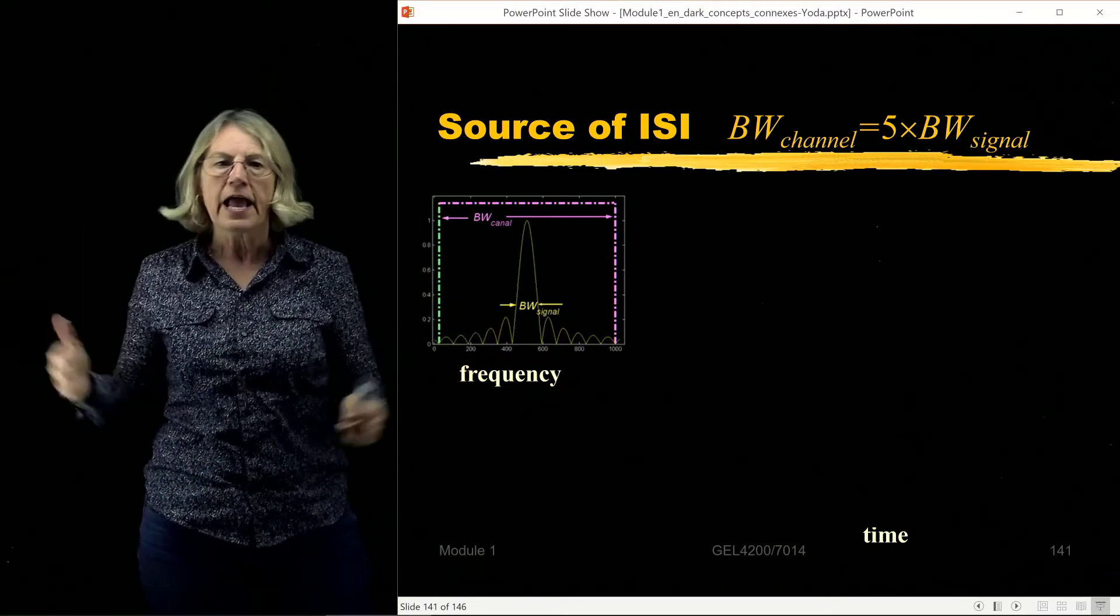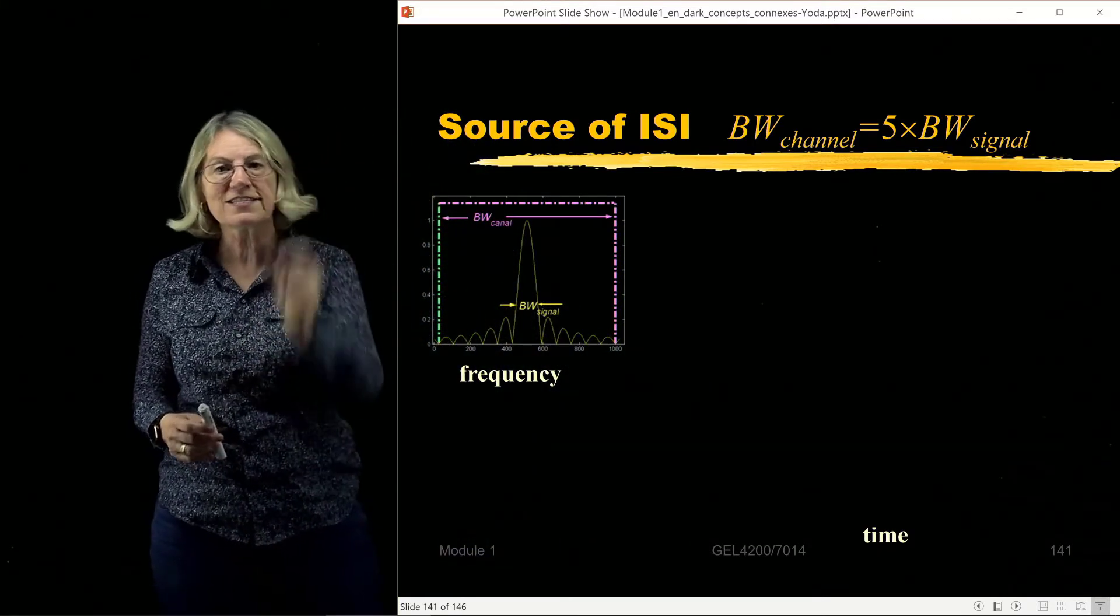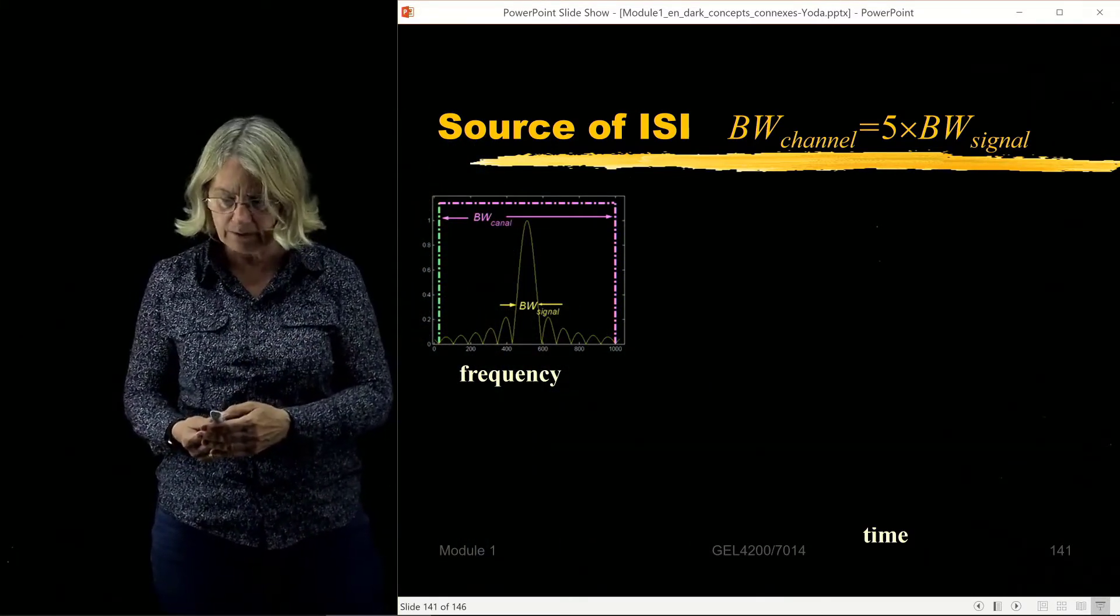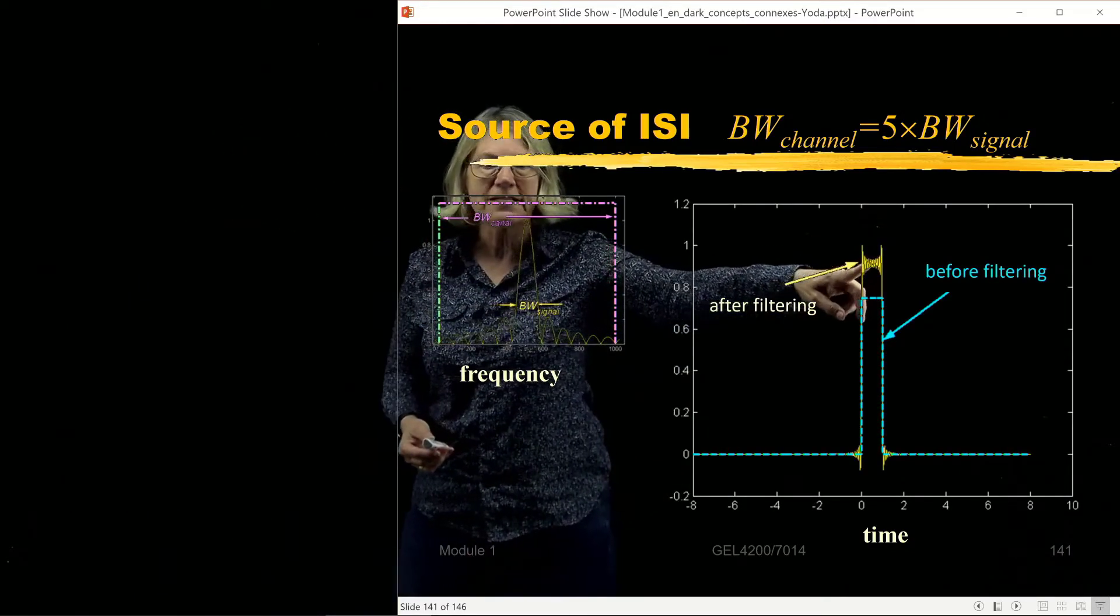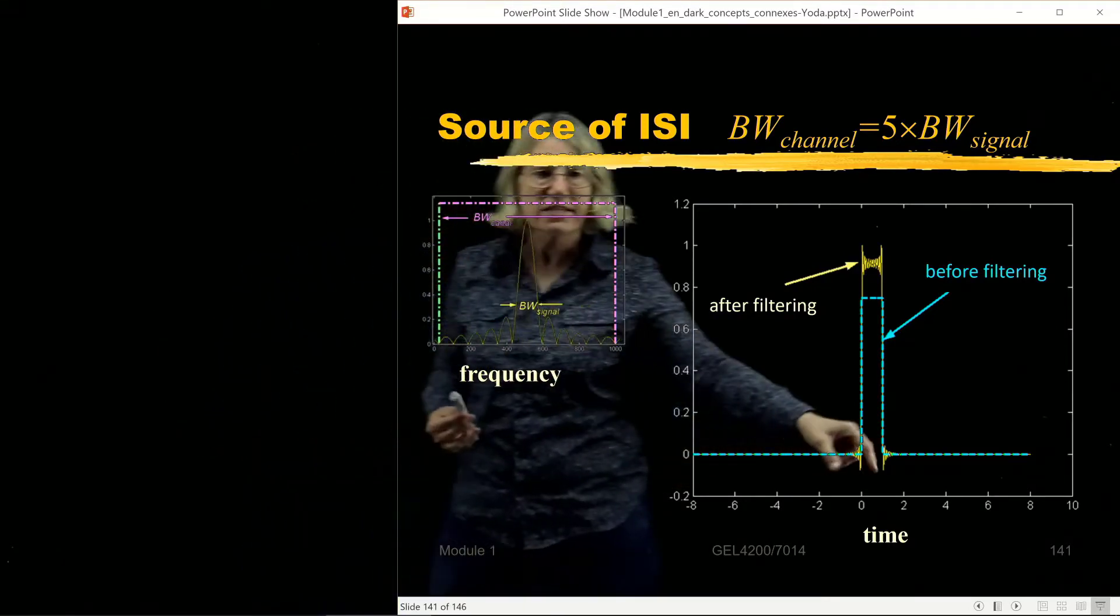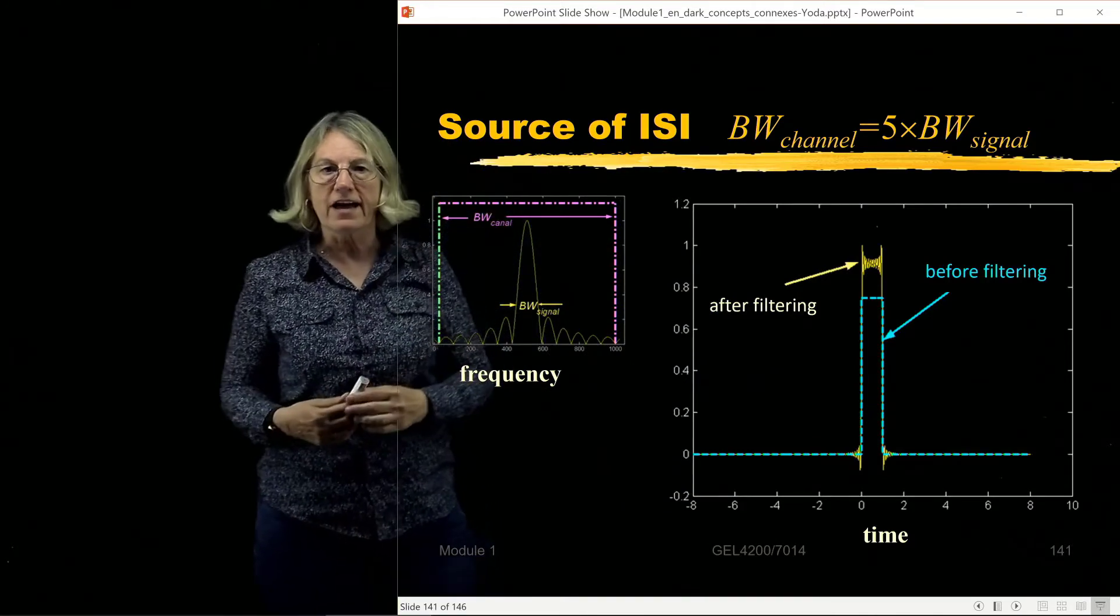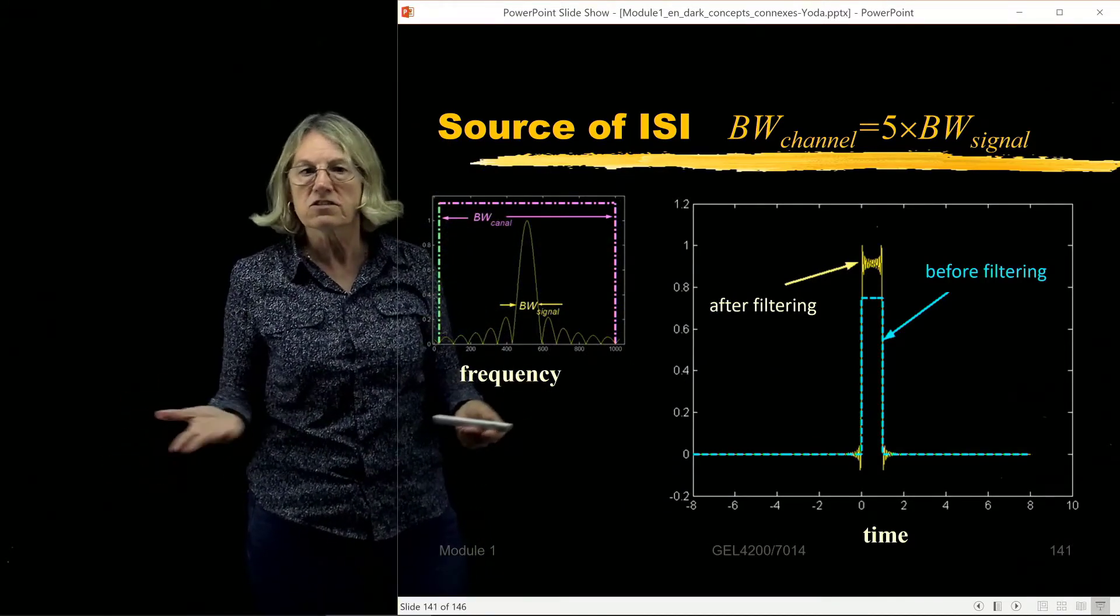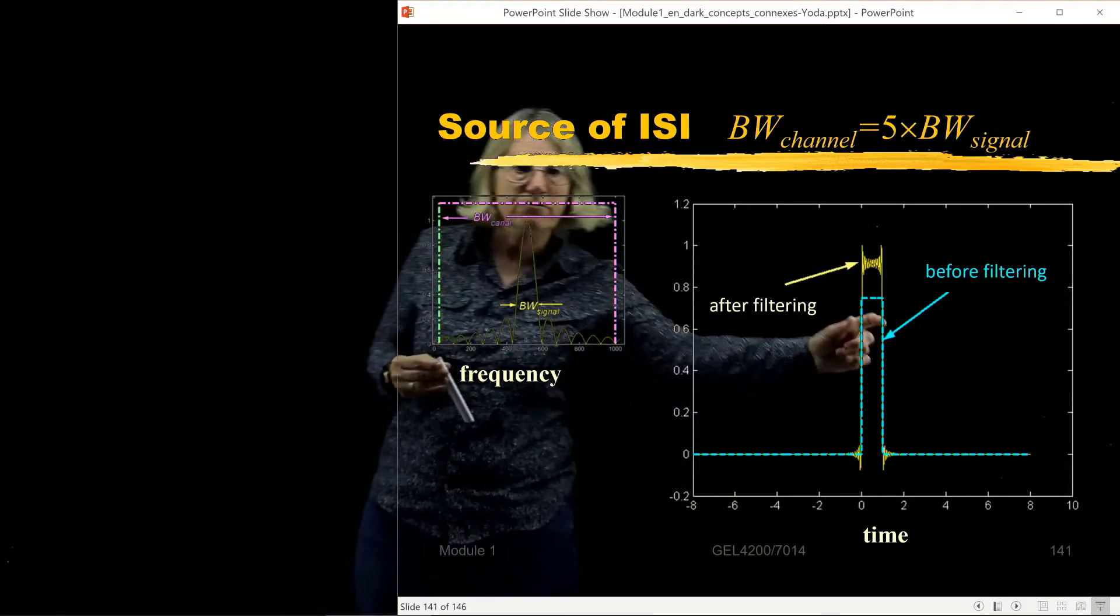I'm going to take that signal and pass it through a low-pass filter. In the frequency domain, I have this rectangular, perfect low-pass filter. In the first example, you can see that the bandwidth of the filter is really wide. In fact, it's five times wider than the main lobe of that sinc function for the signal. Now I look in the time domain and ask, what's happened to that nice impulse that I sent through this channel? We can see here in yellow what happens after the filtering. Not much has happened. It's basically the same rectangle as before. It's still pretty much confined to the same interval of time.